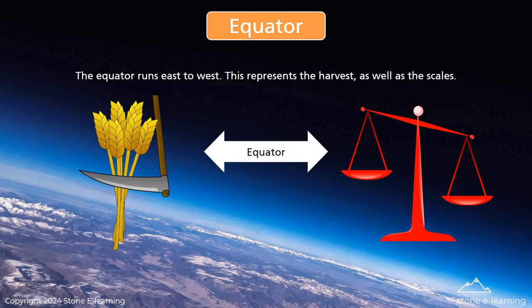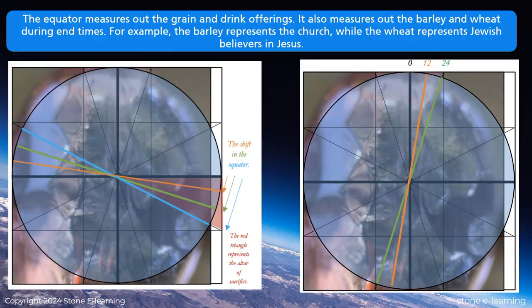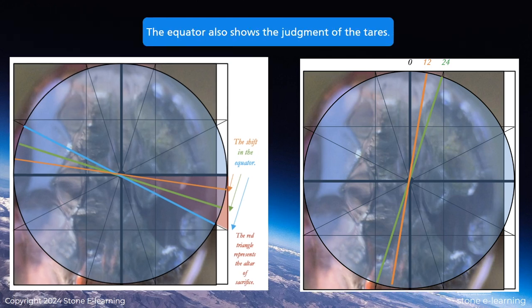The equator runs east to west. This represents the harvest as well as the scales. The equator measures out the grain and drink offerings. It also measures out the barley and wheat during end times. For example, the barley represents the church, while the wheat represents Jewish believers in Jesus. The equator also shows the judgment of the tears.